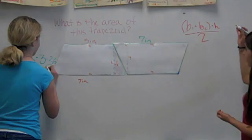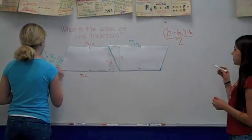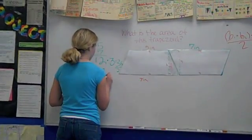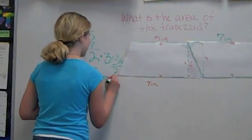So now, this is the equation. Base 1 plus base 2 times the height divided by 2. And that is how you find the area of a trapezoid. Which is 18 square inches. Right.